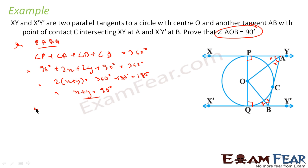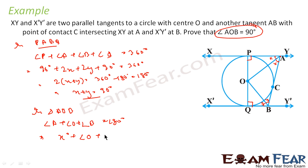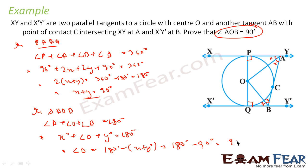Therefore, angle AOB equals 90 degrees. Since we recognized it as an angle problem, we used the 90-degree tangent-radius property and found the equal angles, then applied the angle sum in the triangle to get the final answer.